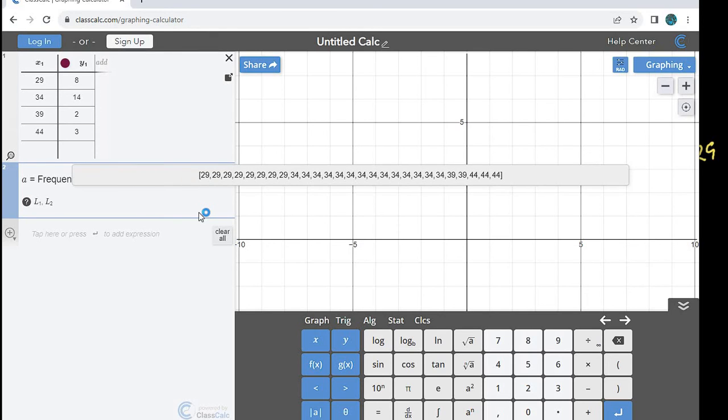And it tells me that there's a 27-item list. Basically, what it's done is it's gone and listed out the 29s 8 times, the 34s—sorry—14 times, the 39 2 times, and the 44 3 times.